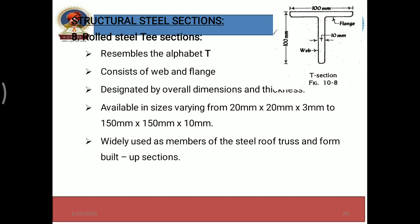The first dimension denotes its overall length or height, the second one is its flange width, and the third is its thickness. T sections are widely used for the construction of steel roof trusses and to form built-up sections — combining different sections to make useful structures. So these are some structural steel sections, and we will see the remaining sections in the next video.